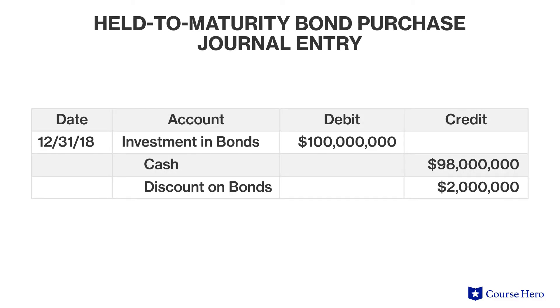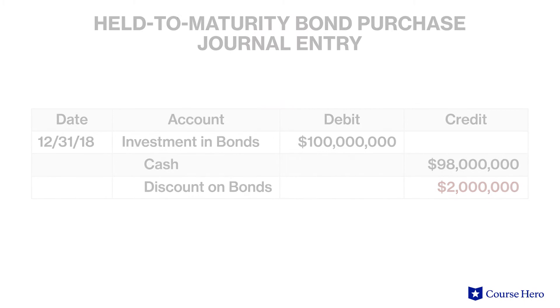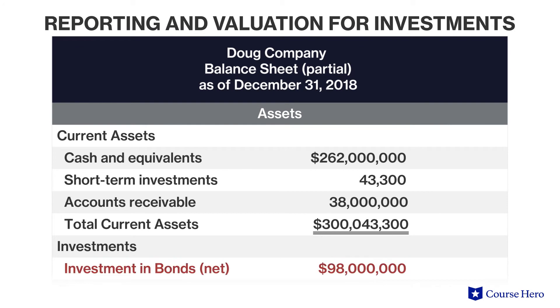For example, if a company purchases $100 million of 10-year bonds at $98 million on December 31st, 2018, the journal entries would recognize a $2 million discount. This bond investment will be carried on the balance sheet at its amortized cost, which is $100 million net of the $2 million discount.